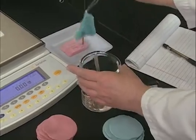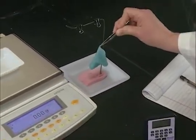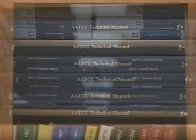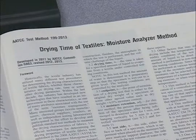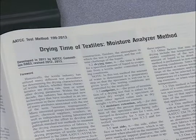The next test methods are those associated with the drying of water from fabrics. AATCC Test Method 199, Drying Time of Textiles, Moisture Analyzer Method, is intended to evaluate the drying time of fabrics using a gravimetric moisture analyzer equipped with a heating element.